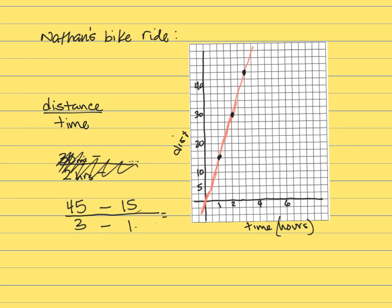So let's say I chose this point, which is 45 and 3. And this point way down here, which was 15 for every one hour. Then I would do the subtraction just like I did before.